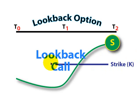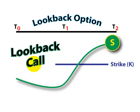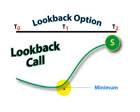However, consider the lookback call option. It doesn't have a strike price. Instead, at exercise, the holder of the lookback call gets to look back to the minimum price of the stock during the holding period. So if the stock reached its lowest value at time T1, that becomes effectively the exercise price.